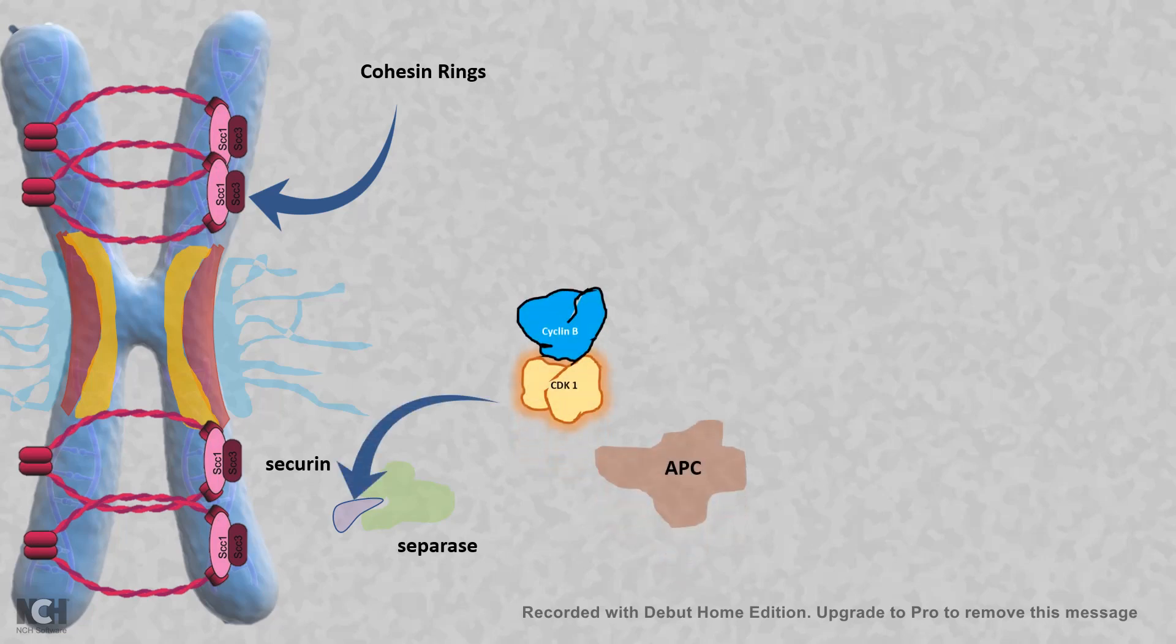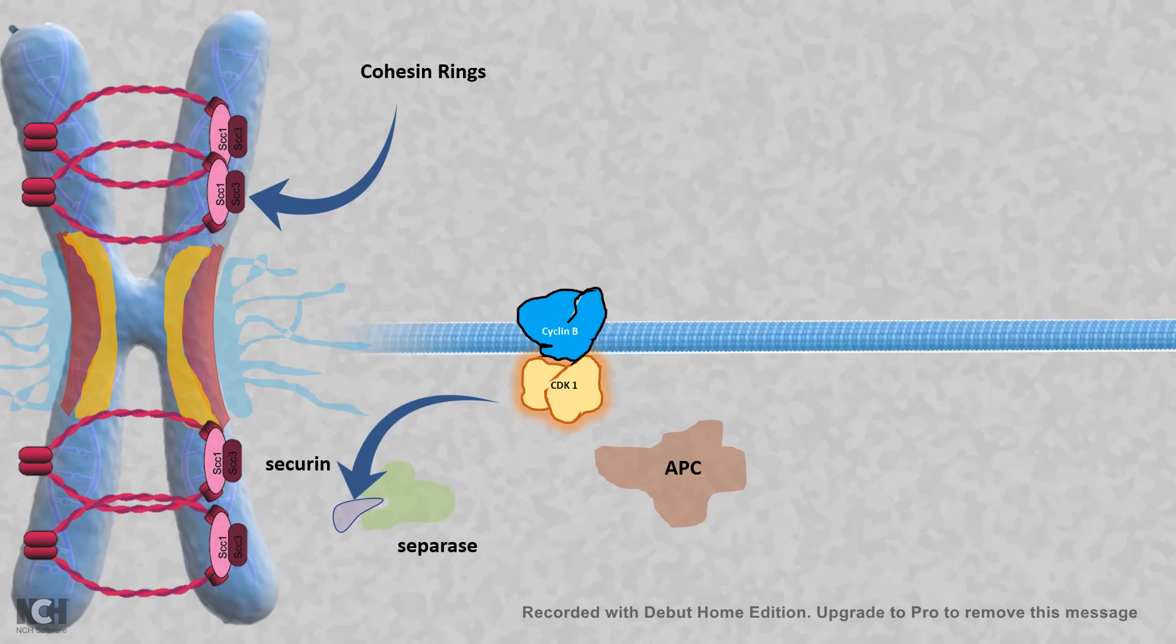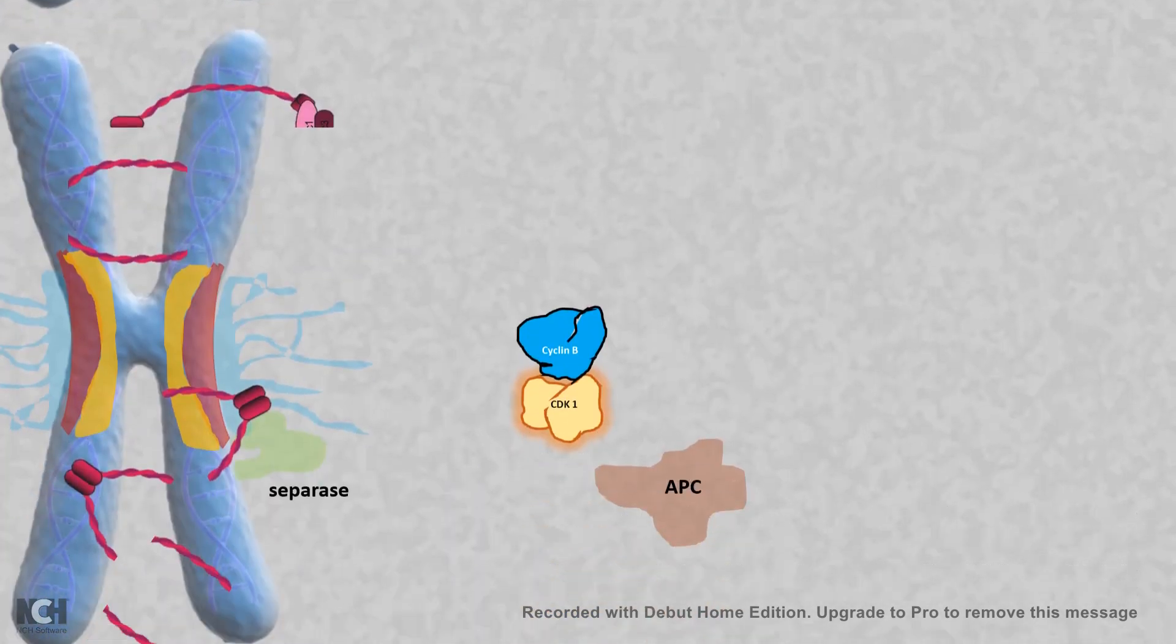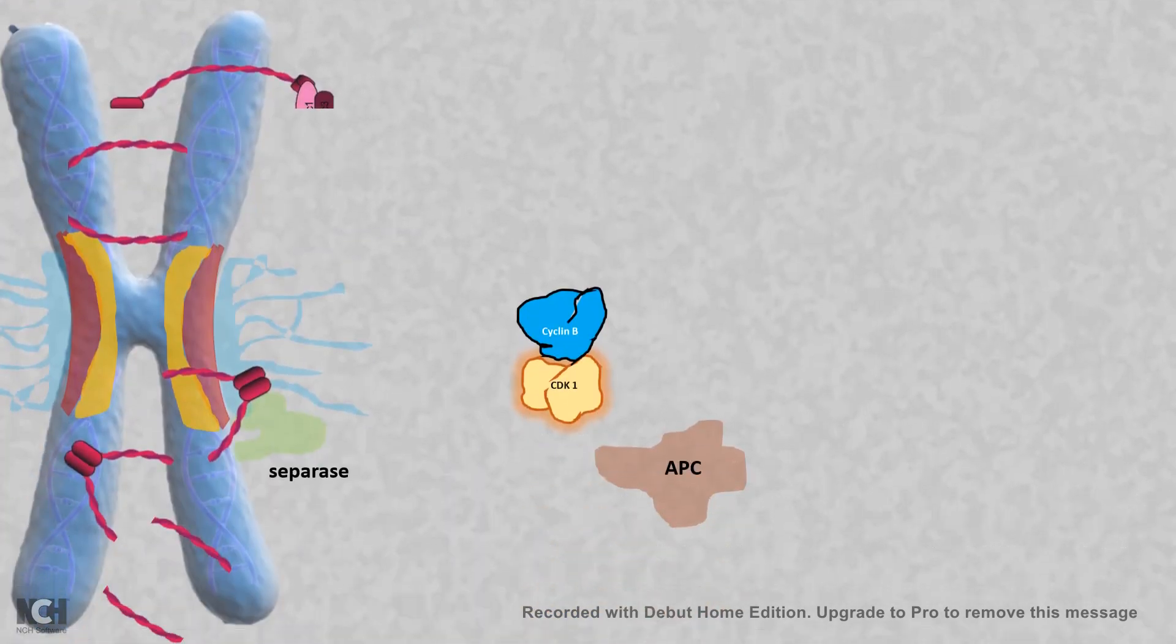Factors like MPF and anaphase promoter complex break down securin. As a result, separase would be free and can break the cohesin rings.